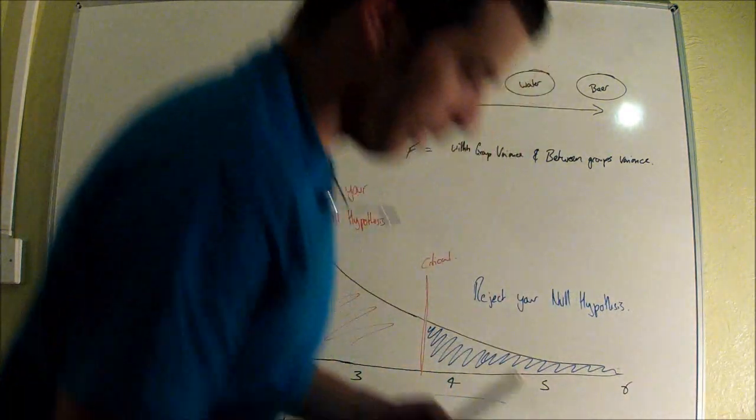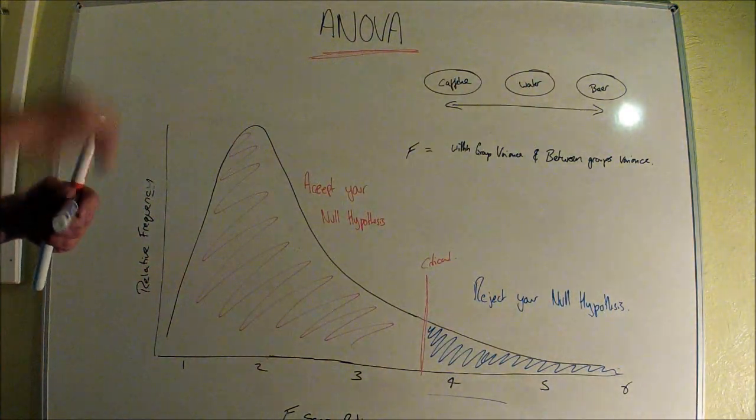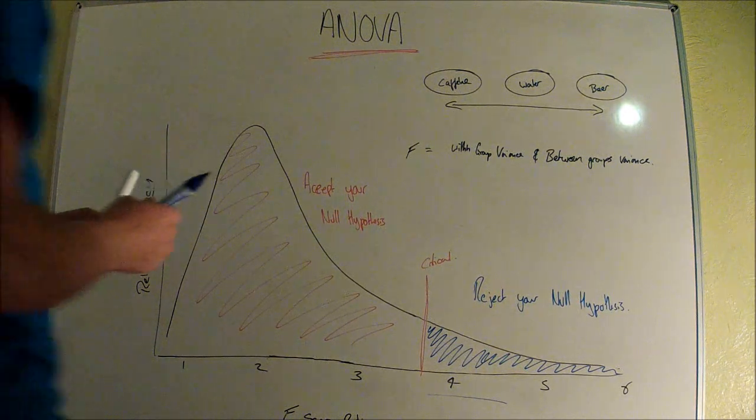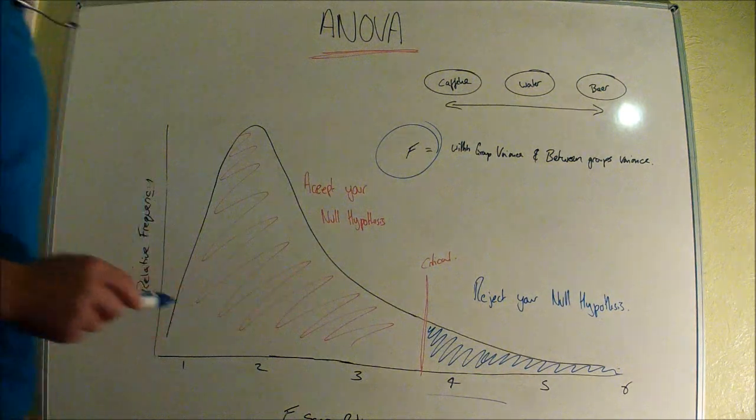That's the basis of how an ANOVA works and what we're really trying to achieve. The next thing we need to do is work out this F value.